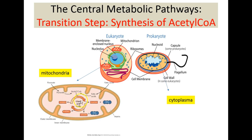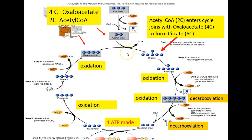The citric acid cycle or Krebs cycle takes place in the inner space called the matrix of the mitochondria — the same space where the transition or intermediate step after glycolysis also occurs. In prokaryotes, the Krebs cycle or TCA takes place in the cytoplasm of the cell.